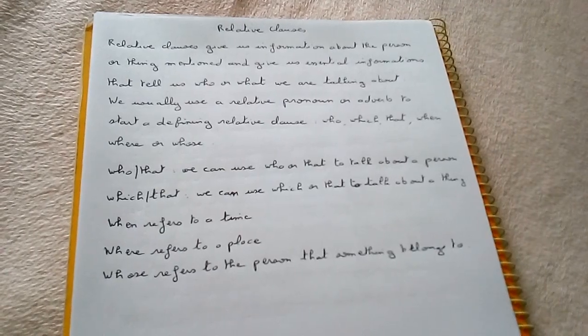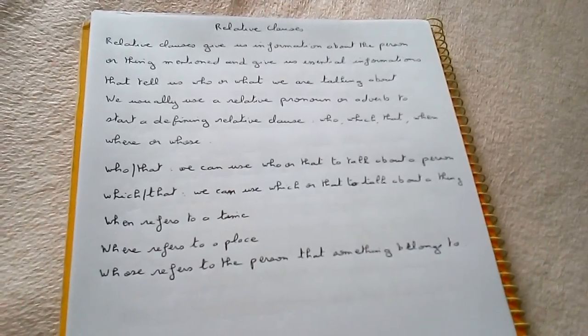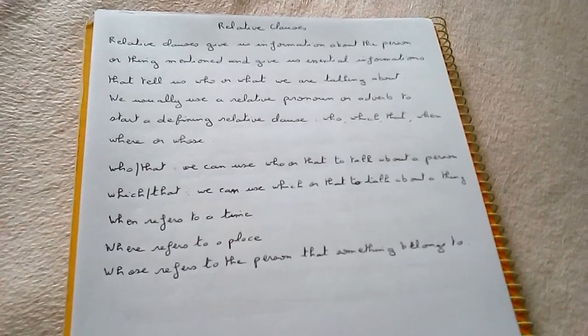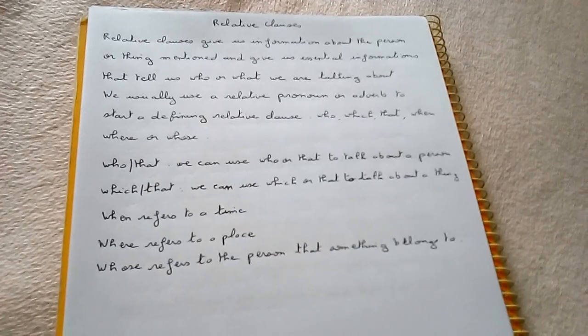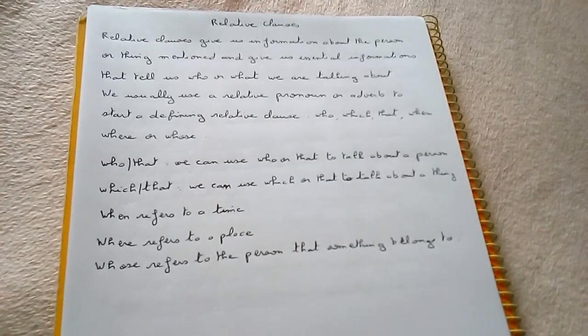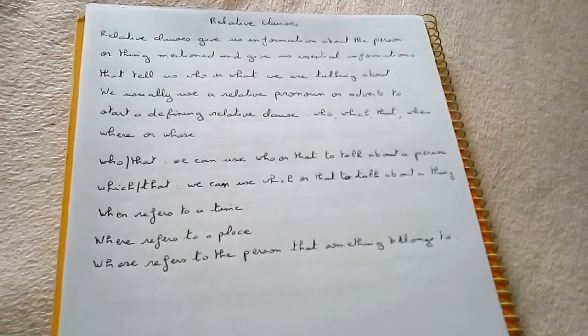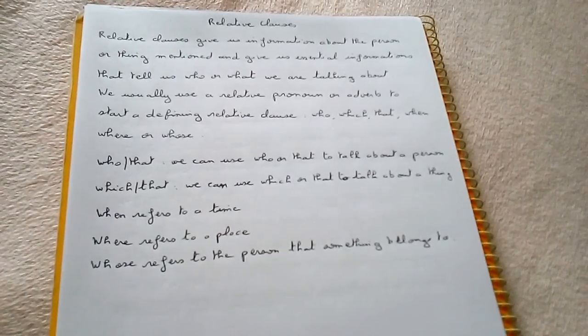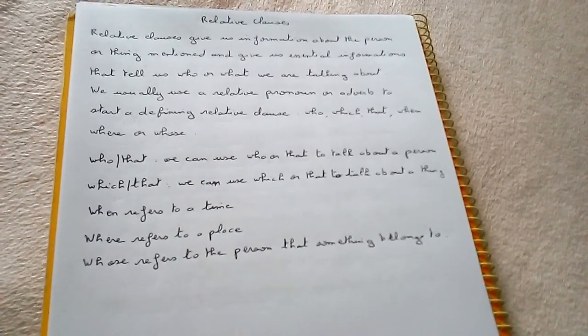Essential information tells us who or what we are talking about. We usually use a relative pronoun or adverb to start a defining relative clause: who, which, that, when, where, or whose. We can use who or that to talk about a person.